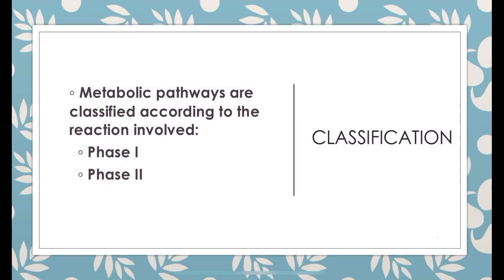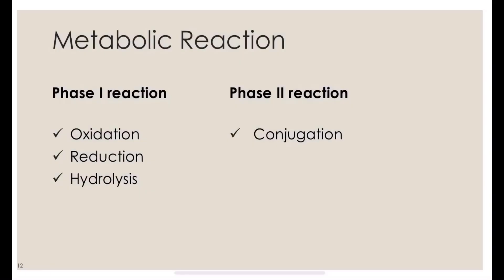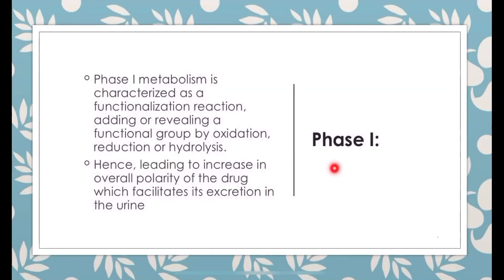Metabolic pathways are classified according to the reaction involved: Phase 1 and Phase 2. Phase 1 reactions include oxidation, reduction, and hydrolysis. Phase 2 involves only conjugation. Phase 1 is characterized as a functionalization reaction, adding or revealing a functional group by oxidation, reduction, or hydrolysis, leading to an increase in the overall polarity of the drug, which facilitates its excretion in urine.